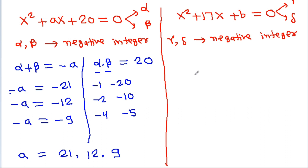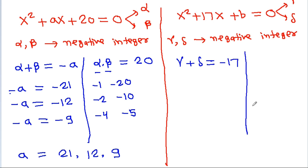For the second equation, the sum of roots gamma plus delta equals minus 17, and the product of roots gamma times delta equals b. Gamma and delta are negative integers.